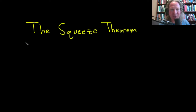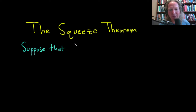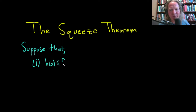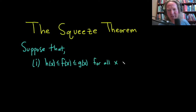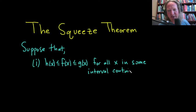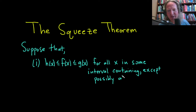So the squeeze theorem says the following. Suppose we have two conditions. The first condition is that h of x is less than or equal to f of x, which is less than or equal to g of x. And let's just say this is for all x in some interval containing c. And this doesn't actually have to be true at c itself — except possibly at c itself.